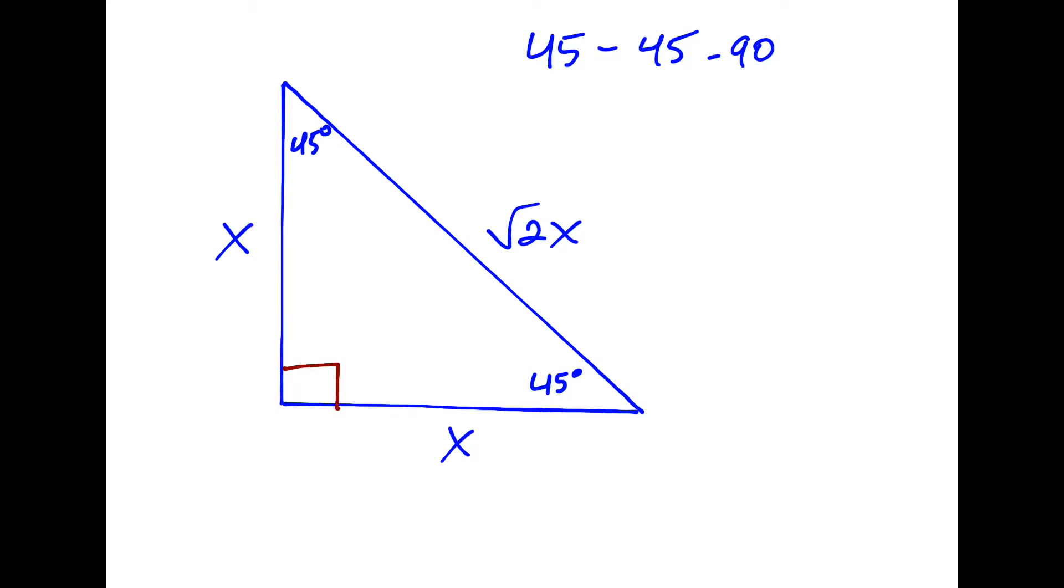We looked at special right triangles like the 45, 45, 90, that is the degrees are 45, 45, and 90. So this was an isosceles triangle, the two legs were the same, and the hypotenuse was whatever x was multiplied by the square root of 2. There's always this ratio between the two.